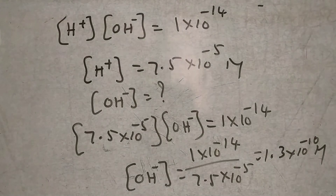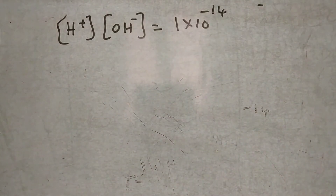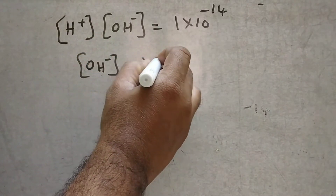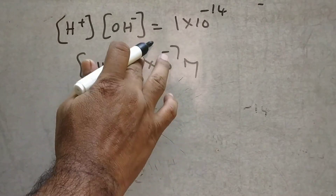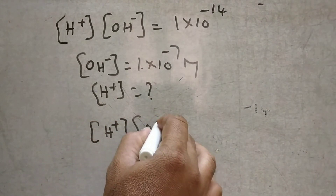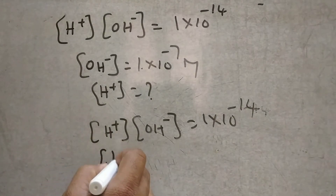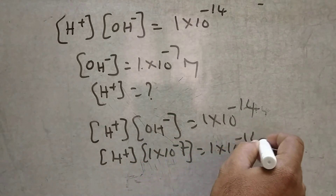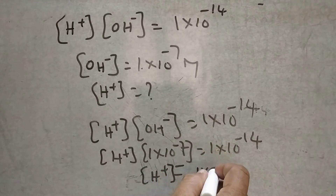Next problem: suppose OH minus concentration is given as 1 into 10 to the power of minus 7 M. Then, H plus concentration equals how much? Substituting in the equation: H plus concentration multiplied by OH minus 1 into 10 to the power of minus 7 equals 1 into 10 to the power of minus 14. Then H plus concentration equals 10 to the power of minus 7 M.